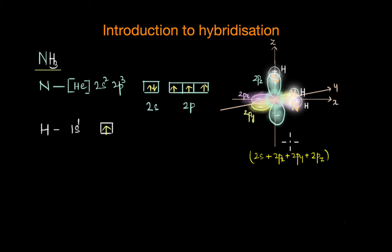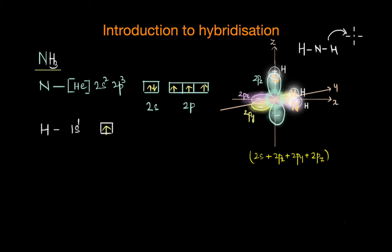Here's the interesting thing. The 2p orbitals of nitrogen are all oriented at 90 degrees from each other. When these 2p orbitals combine with the 1s orbitals of hydrogen atoms, we would predict the geometry of ammonia such that the H-N-H bond angle should be around 90 degrees, because the 2p orbitals are all along different axes that are at 90 degrees from each other and the 1s orbitals of hydrogen atoms are overlapping with these 2p orbitals.